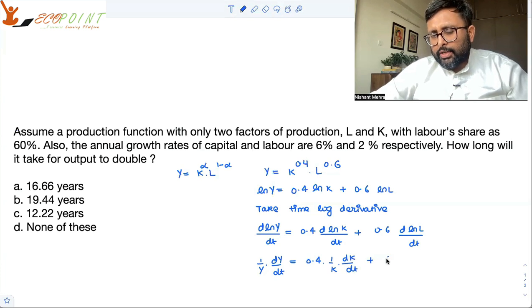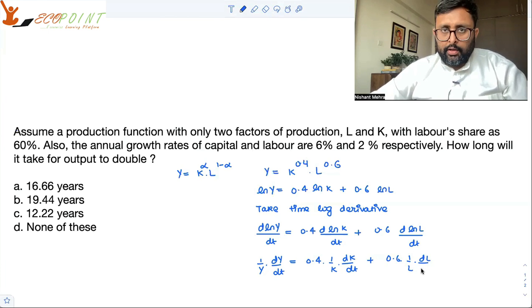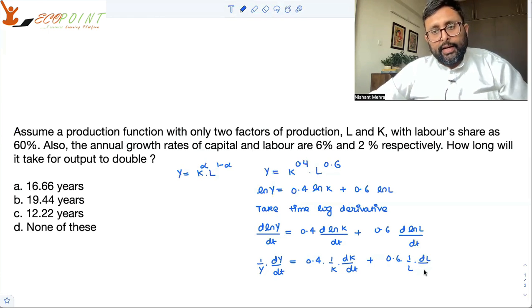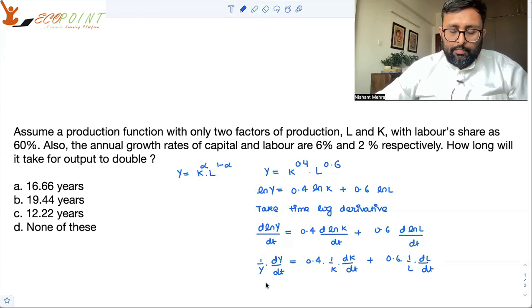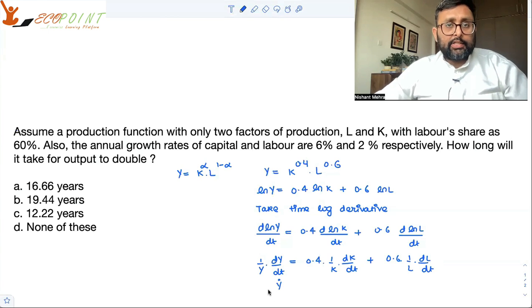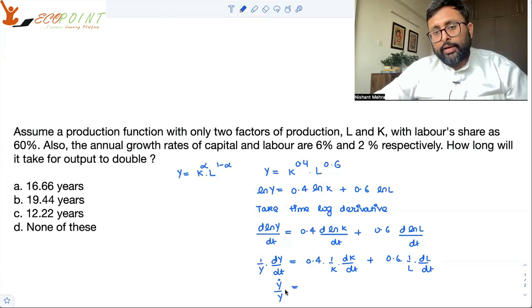I think in one of the questions, I have explained this. So, these are the time log derivatives. Log L's derivative is 1 upon L, and what is L's derivative with respect to T? dL by dt. And I think I have told you this thing also. dY by dt is the Y dot. That is the instantaneous change in Y. And Y dot by Y is the growth rate in Y. Be very clear about it.